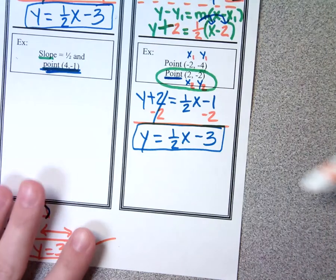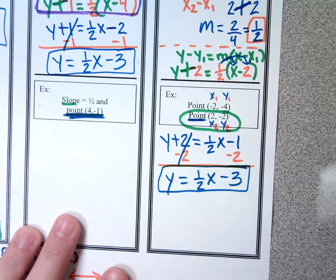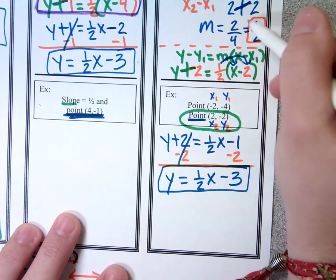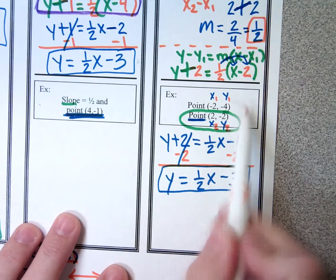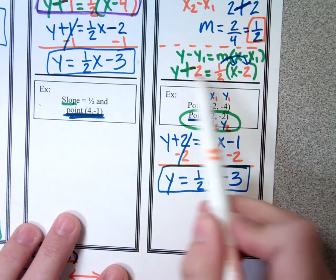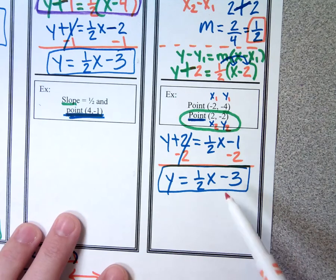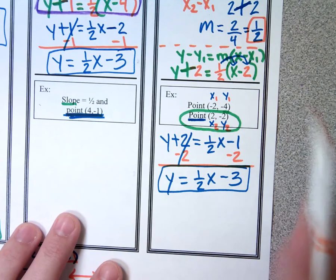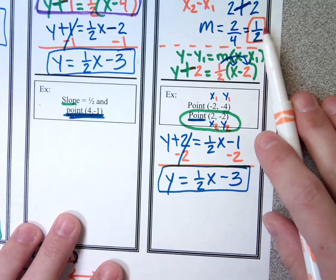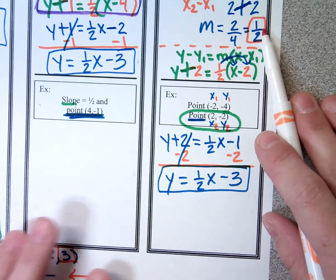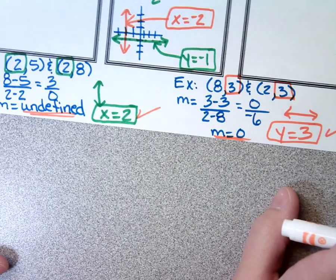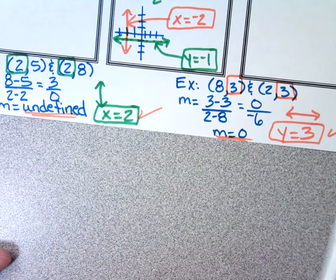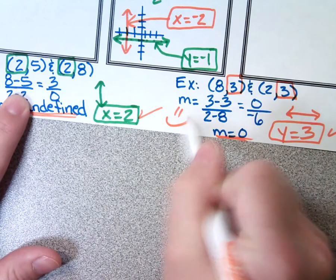And that's all. When working problems with given points, find slope first. If slope is undefined or zero, take the shortcut: look at the ordered pairs, see what they have in common, and write your equation. If slope is something else, pick a point, put it in point-slope form, do the conversion, and get slope-intercept form. Thank you so much.